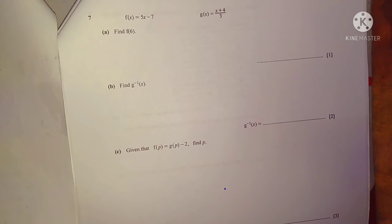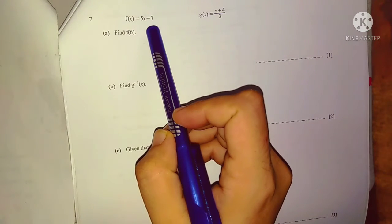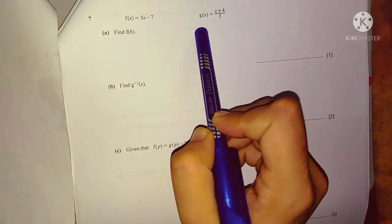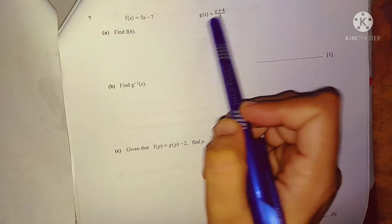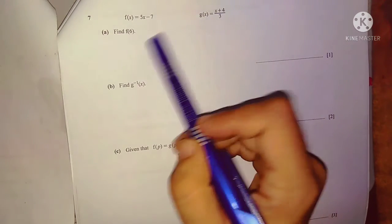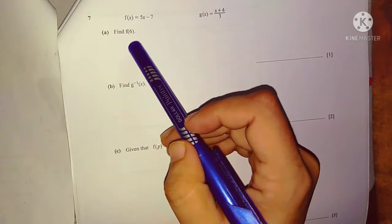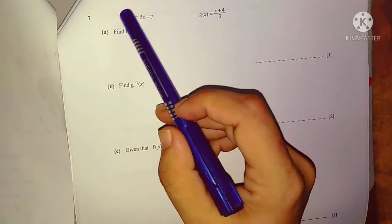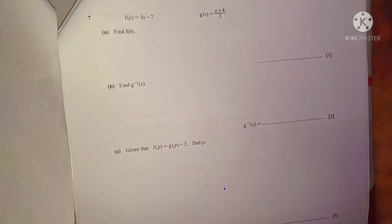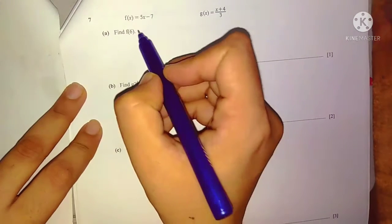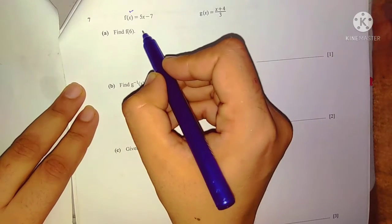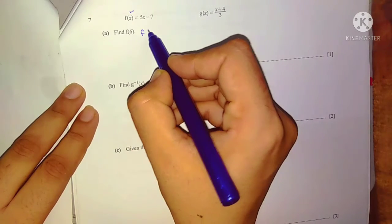Here you can see that two functions are given. F of x which is 5x minus 7, and g of x which is equal to x plus 4 over 3. Part a is to find f of 6. So f of 6 means we use the f function — first write down this function. F of 6 means that in place of x, you will put 6.